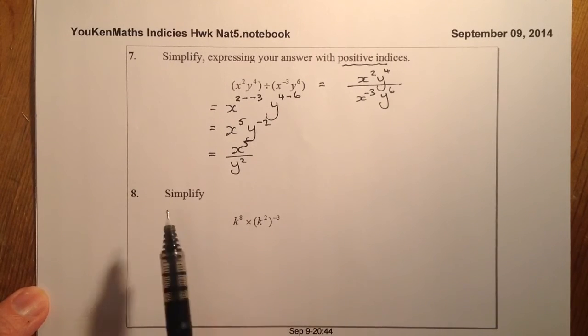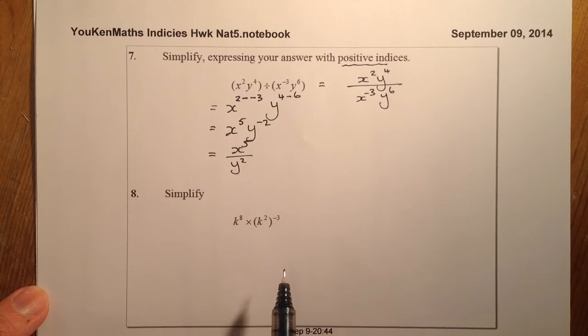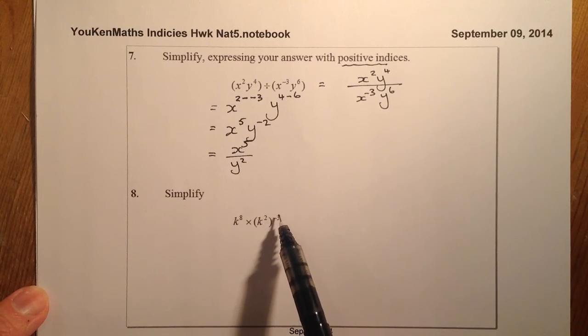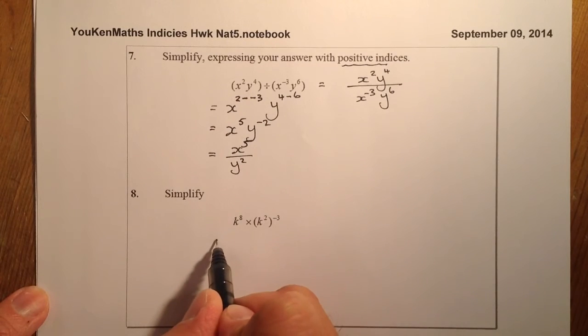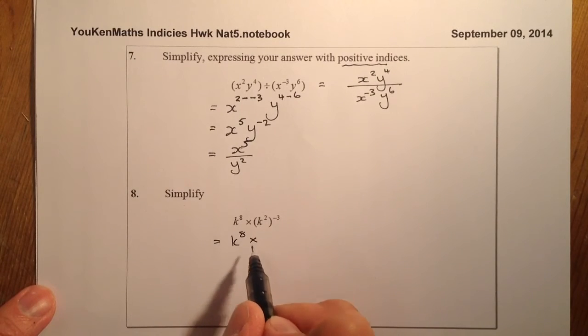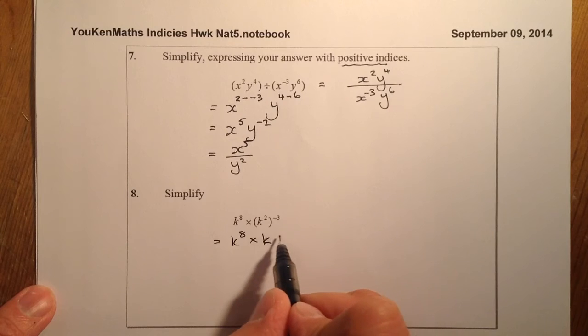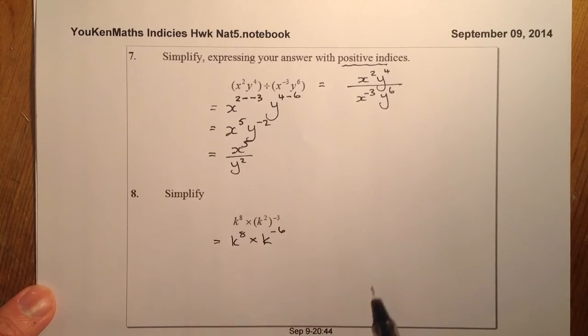Question 8. We have to simplify k to the power of 8 times k squared to the power of minus 3. With a power to the power, this is the only time we multiply the indices together. I've got k to the power of 8 that I'm not touching yet. I'll multiply these out: k to the power of minus 6, that's 2 times minus 3.